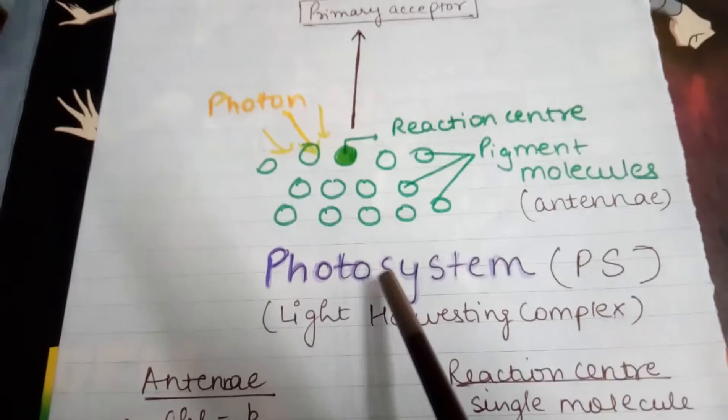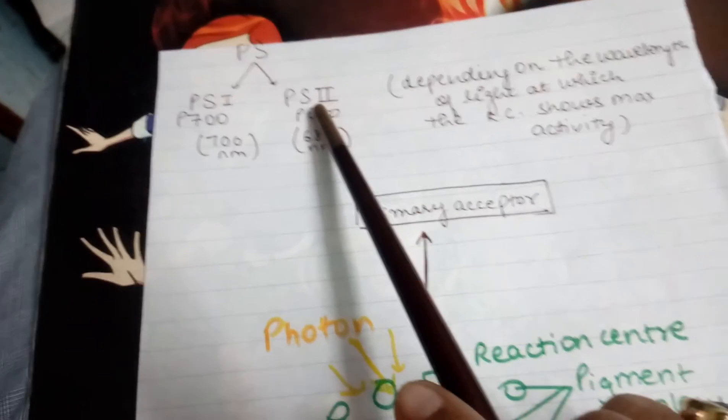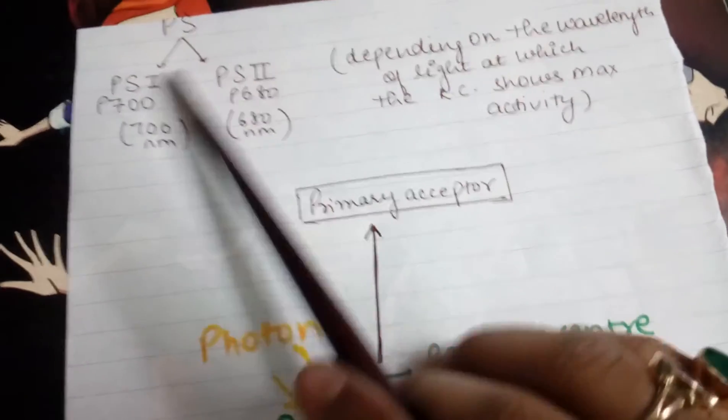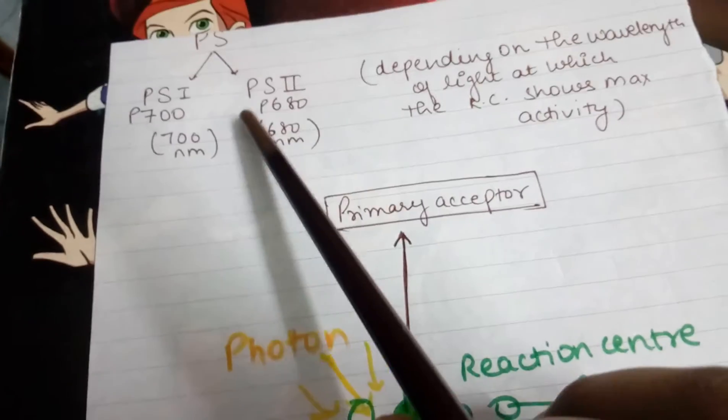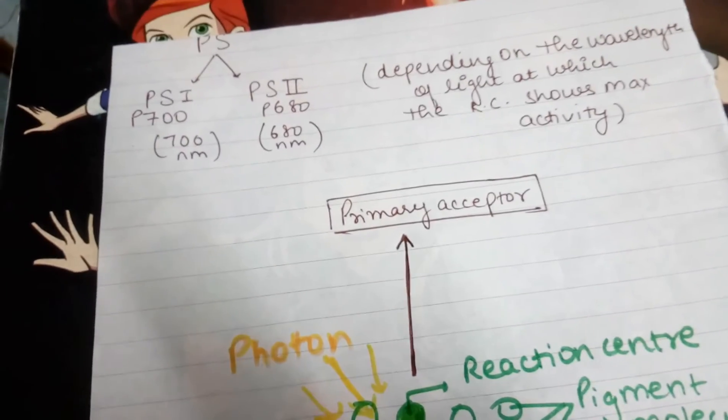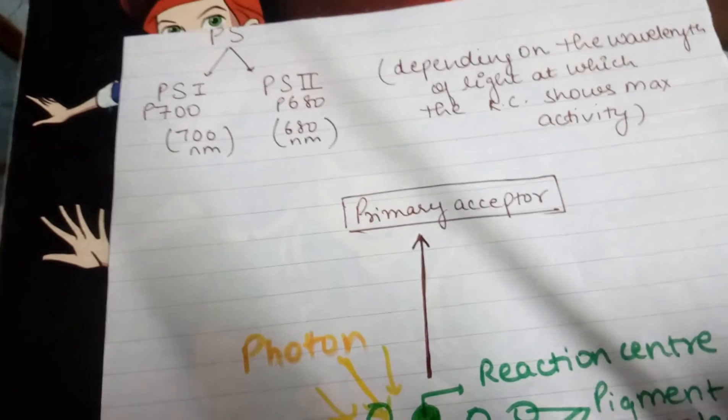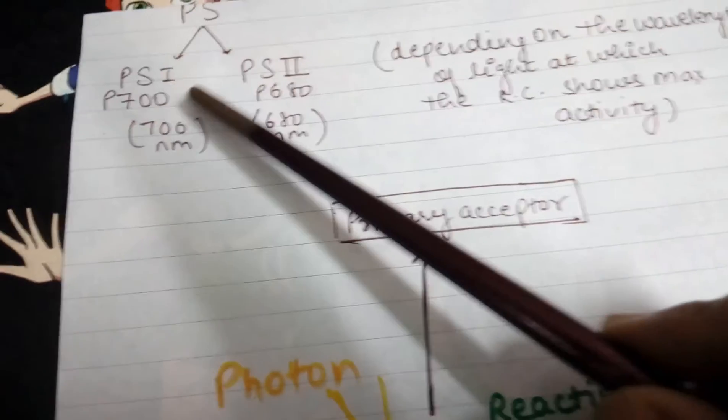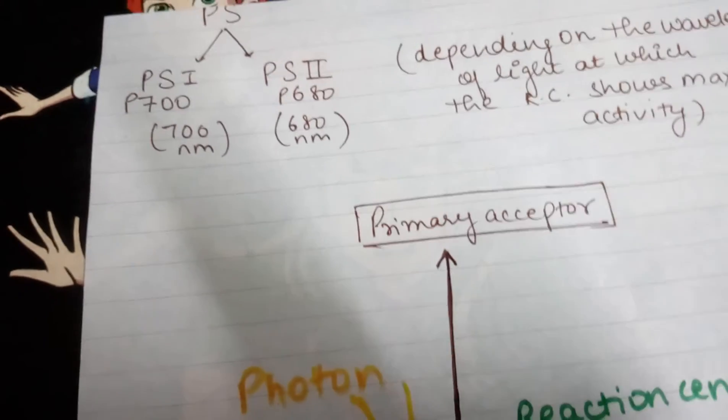Coming to the types of photosystems, we have two kinds: photosystem 1 and photosystem 2. These photosystems are not numbered in the order in which they appear in photophosphorylation or the light reaction of photosynthesis. They are actually named 1 and 2 based on the method of their discovery.